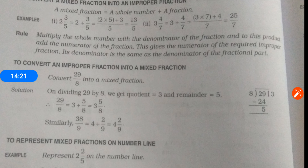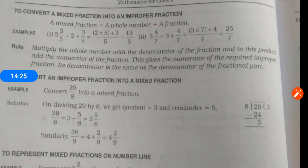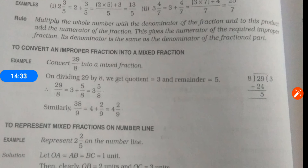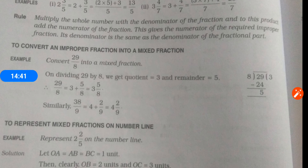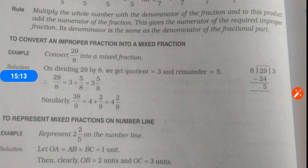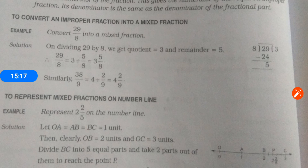To convert an improper fraction to a mixed fraction: for example, convert 29 upon 8. On dividing 29 by 8, we get quotient 3 and remainder 5. So 29/8 equals 3 + 5/8, which is written as 3 and 5/8. Similarly for 38 upon 9 — divide the numerator, and the quotient and remainder form the mixed fraction.